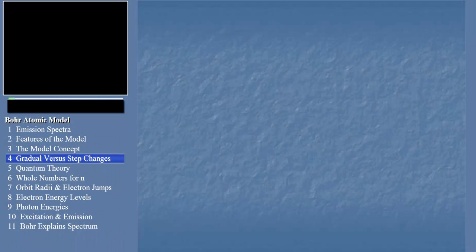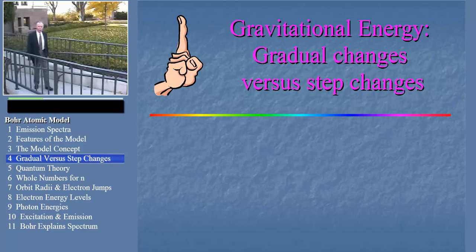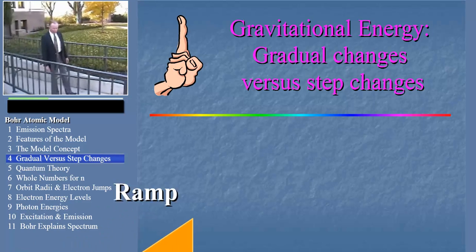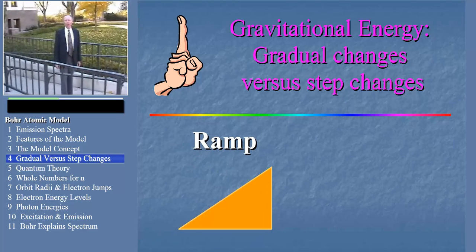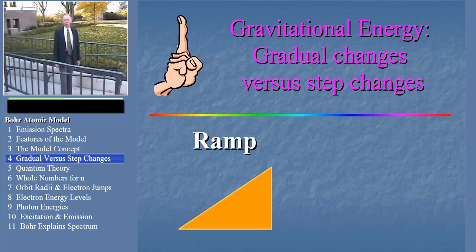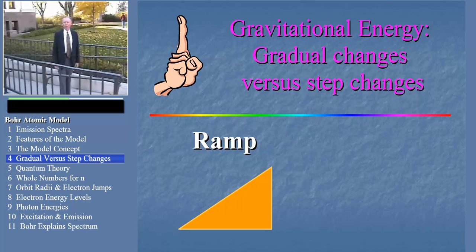We don't usually think of gravitational energy behaving like the energy of an electron. But it will be instructive to imagine an artificial situation in which it does. When I'm walking up a ramp, I can be at any elevation I choose. You might say I can be at any gravitational energy I choose with respect to the Earth, depending on the elevation of the ramp.